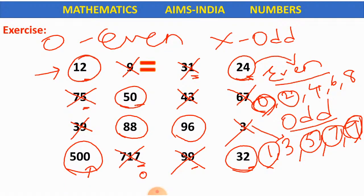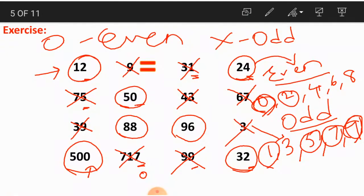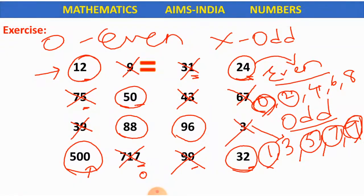Remember, children — whenever such questions are given, write the numbers which are even and odd, then consider the digit in the ones place, check whether it is even or odd, and then write the answer.